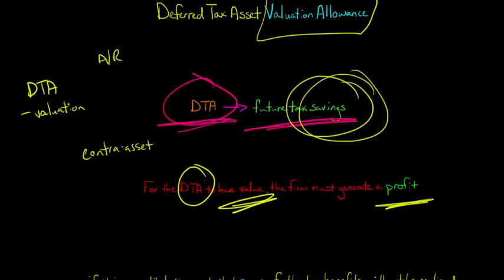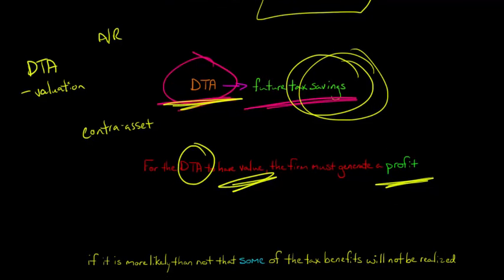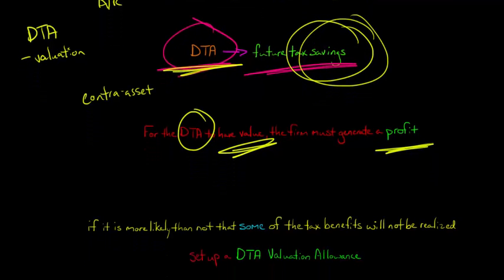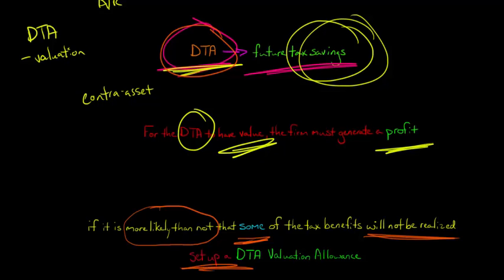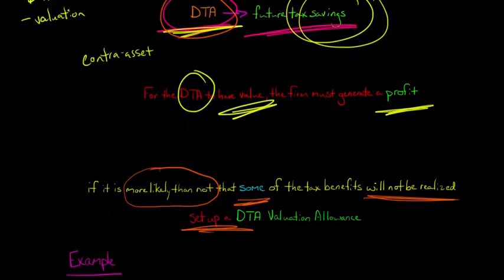How do we decide whether or not the firm's going to generate a profit, or whether some of the Deferred Tax Asset needs to be offset with a valuation allowance? The decision rule is: if it's more likely than not — so more than 50% likely — that some of the tax benefits, some of the Deferred Tax Asset, will not be realized, then you need to set up a Deferred Tax Asset valuation allowance to reduce the value on the balance sheet.